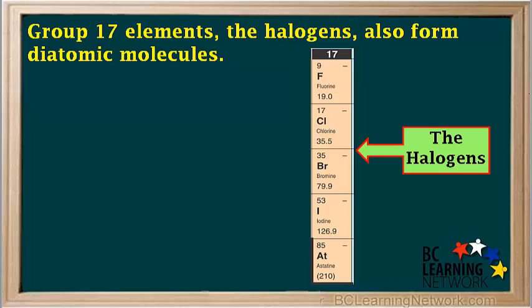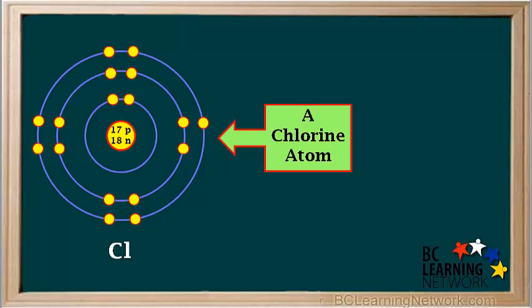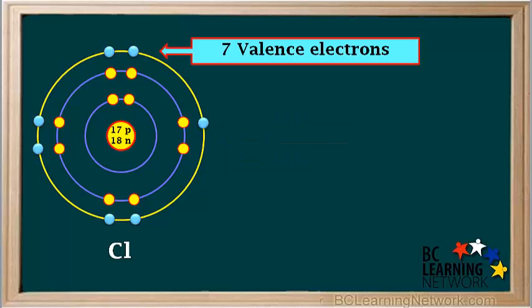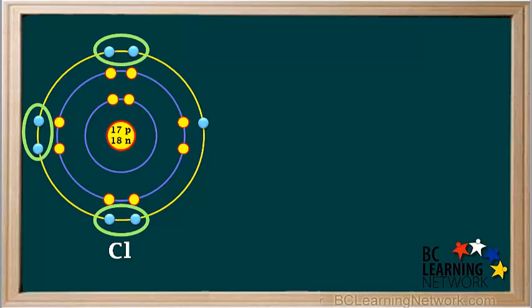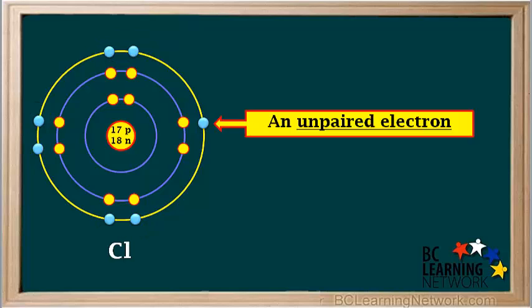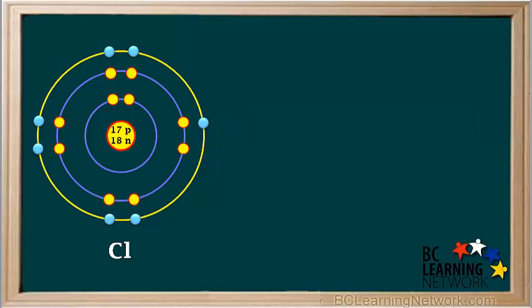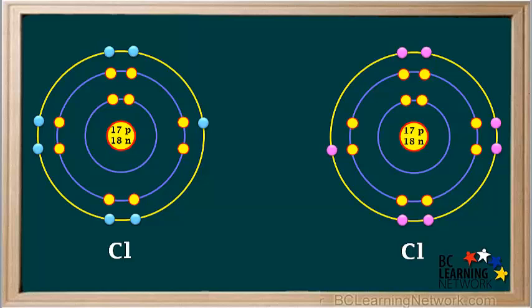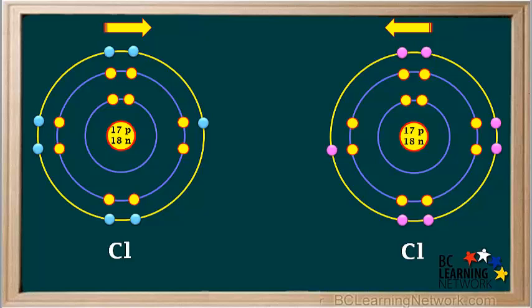Group 17 elements, the halogens, also form diatomic molecules. Let's have a look at the Bohr model for a single atom of chlorine. It has 17 protons and 17 electrons, and the most common isotope of chlorine has 18 neutrons. Notice that a chlorine atom has seven valence electrons, as shown by the light blue circles. There are three pairs of valence electrons, and this single electron is unpaired. Let's show another chlorine atom on the right; we'll color the valence electrons of this atom pink. Here is the unpaired electron in the chlorine atom on the right. Let's see what happens as these two atoms move toward each other.